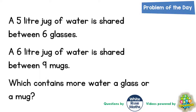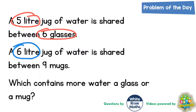Welcome, problem solving fans, to another problem of the day. This one is all about jugs of water being split between glasses and mugs. We've got a five litre jug of water shared between six glasses, and a six litre jug of water shared between nine mugs. Which contains more water — a glass or a mug? The easiest way to do this is to figure out what one glass contains and how much water one mug contains.